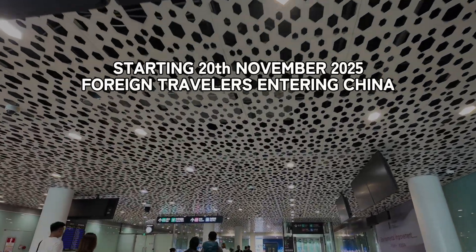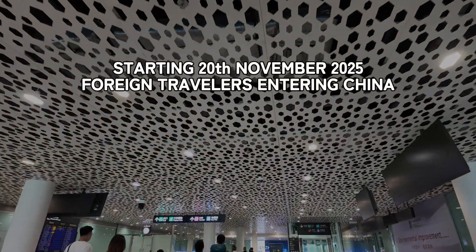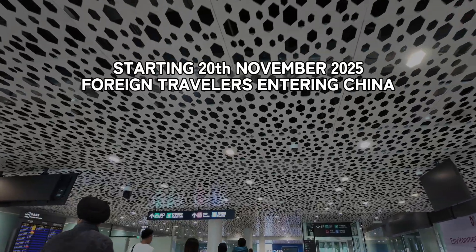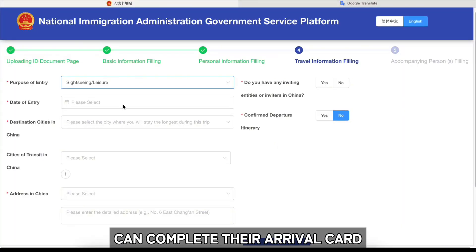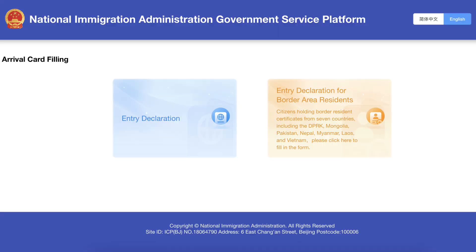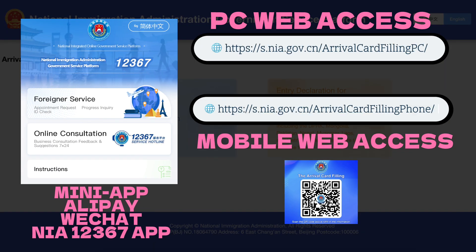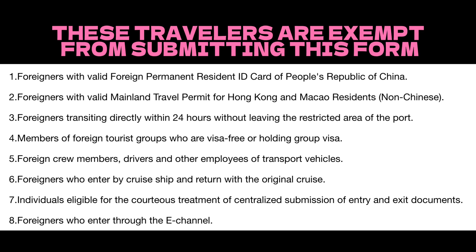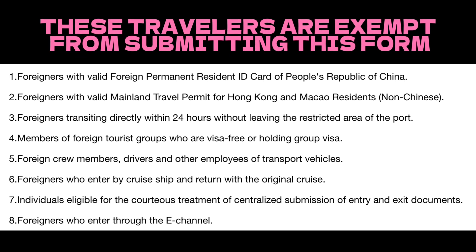Starting November 20th, 2025, foreign travelers entering China can complete their arrival card online about six days before arrival, through various official platforms. These travelers are exempt from submitting the paper form.